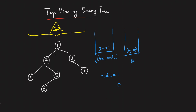Level order traversal processes left then right. Node 1 has left child 2, so push 2 with line minus 1; right child 3 gets line plus 1. Next, take node 2 with line minus 1. Line minus 1 is not in the map, so node 2 is the first node on that line — store it. Node 2's left child is 4, so push 4 with line minus 2. Node 2's right child is 5, so push 5 with line 0.